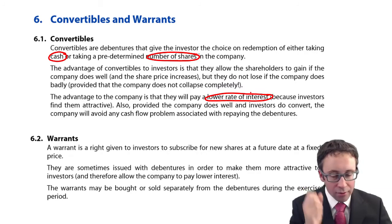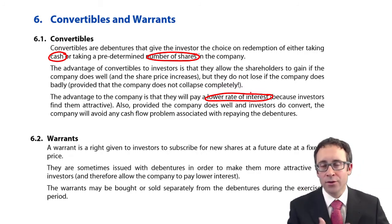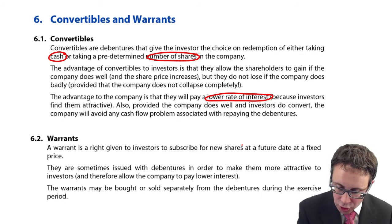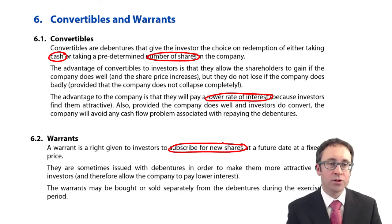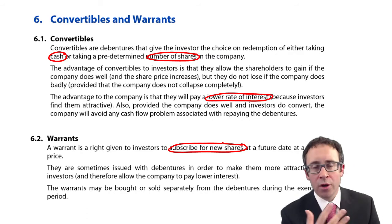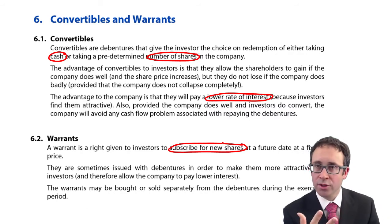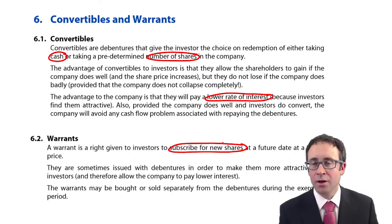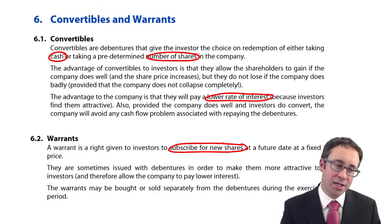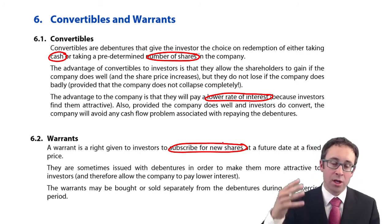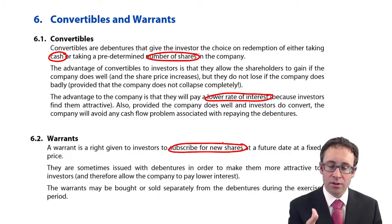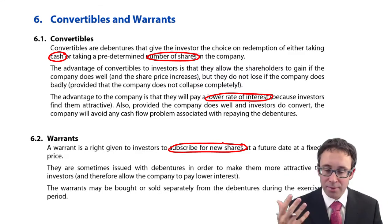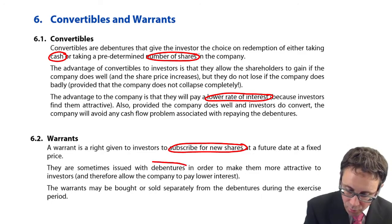In terms of a warrant, just be careful. People get confused. The warrant is a right to subscribe for some new shares. So you are offered the opportunity to buy shares in the future. Now that's different to a convertible because you've made an investment of your cash within the business. And then at the end, you either get your cash back or you get shares, but you don't have to pay for those shares.